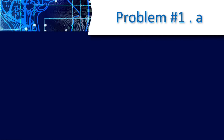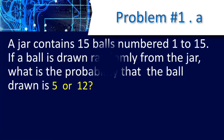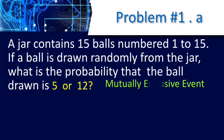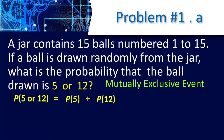Let us have problem A. What is the probability that a ball drawn is 5 or 12? This is a mutually exclusive event since 5 or 12 are different. The formula: probability of 5 or 12 equals the sum of their probabilities — probability of 5 plus probability of 12. That is 1 over 15 plus 1 over 15, which equals 2 over 15.